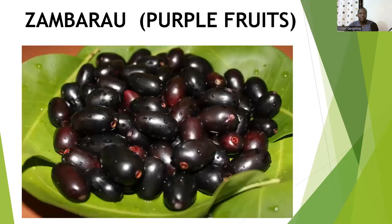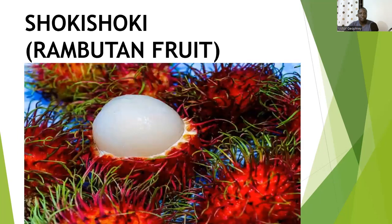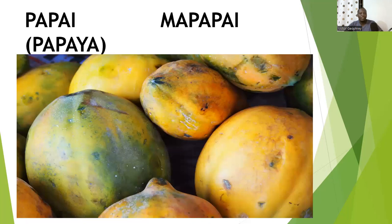Then there is zambarao — tamarind fruit. Then there is shoki — Lambton fruit. Then there is papai — papaya. In plural is mapapai.